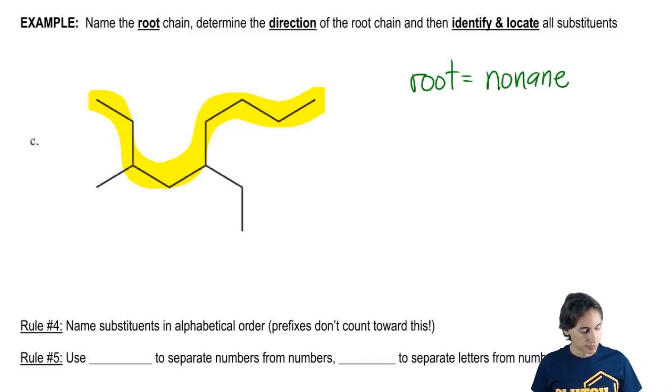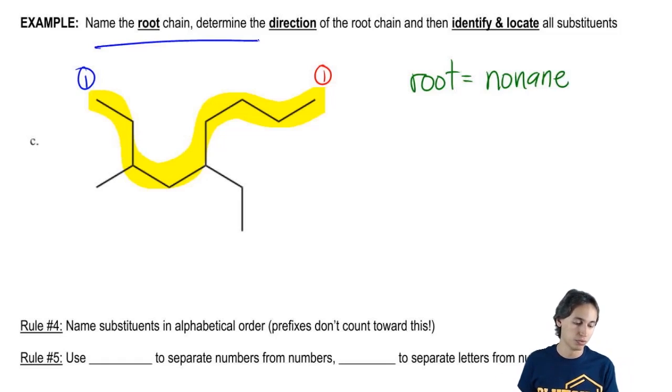Now we have to determine the direction. So this one's actually pretty easy. This is my one in blue. This is my one in red. Which one's going to be a better direction? And obviously it would be the blue, because I'm going to get to my first substituent at the three position. Whereas with the red, I wouldn't get to my first substituent until the five position. So that one's just a loser. Red sucks.